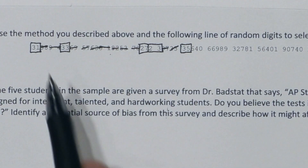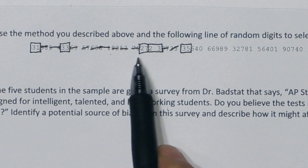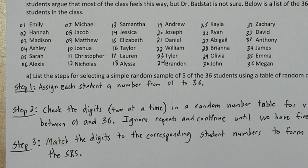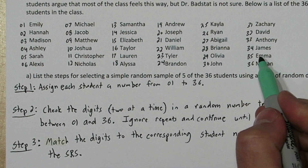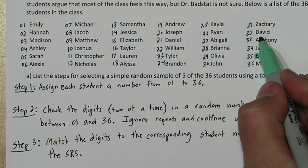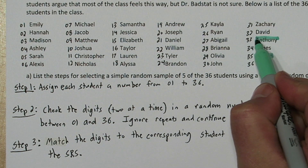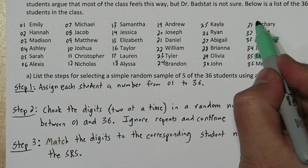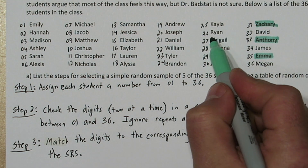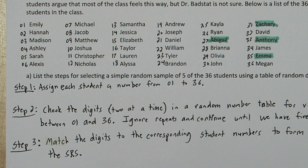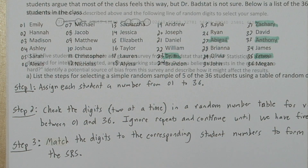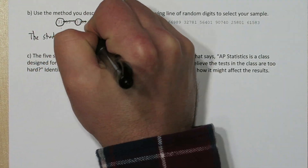So we're going to use the numbers 31, 33, 27, 23, and 35. Let's look at what names those correspond to: Emma is 35, Anthony is 33, Zachary is 31, Abigail is 27, and Tyler is 23. So those are the students in our sample.